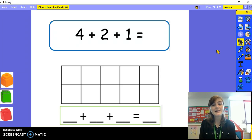Here we have an addition sum with three numbers. Can you read it with me? Four plus two plus one equals. Adding three numbers is a little tricky. So I'm going to show you a good way you can learn how to do it. I have got three different coloured cubes.